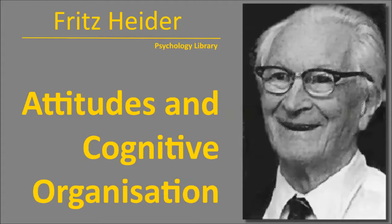Analogously, the two balance states for P and O will be P L O plus P U O, and P tilde L O plus P tilde U O. Examples: P likes his children, people similar to him. P is uneasy if he has to live with people he does not like. P tends to imitate admired persons. P likes to think that loved persons are similar to him.